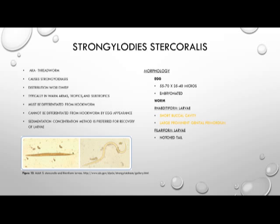The difference is in the rhabditiform larvae. The rhabditiform larvae of Strongyloides stercoralis has a short buccal cavity and a large prominent genital primordium. The filariform larvae of Strongyloides stercoralis has a notched tail, where the hookworms have a straight tail.